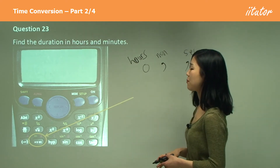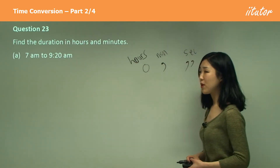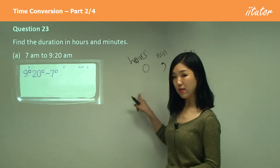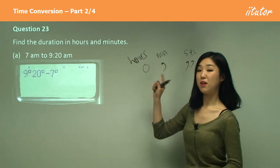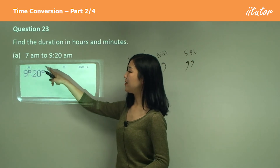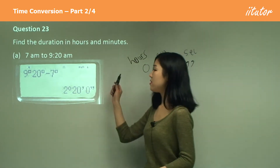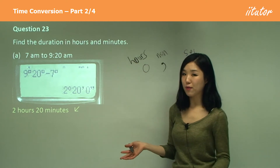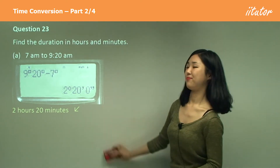Starting from question 23, part a: 7 a.m. to 9:20 a.m. We press 9, then that button — which means hours — then press it again for 20 minutes. So 9°20' minus 7° gives us the answer. Put it in your calculator and you should get 2 hours, 20 minutes, and 0 seconds. So the answer is simply 2 hours 20 minutes. How easy was that? It should only take a few seconds.